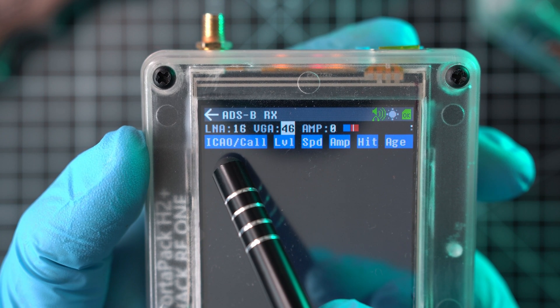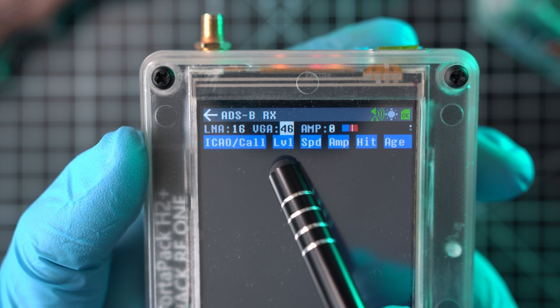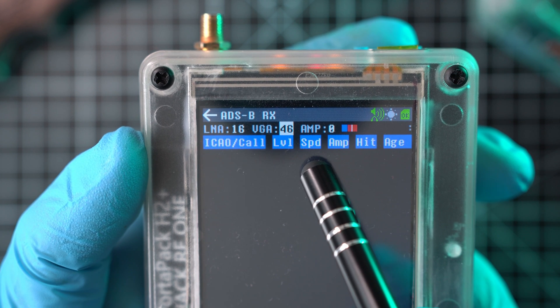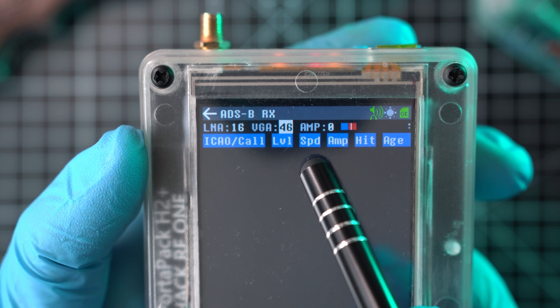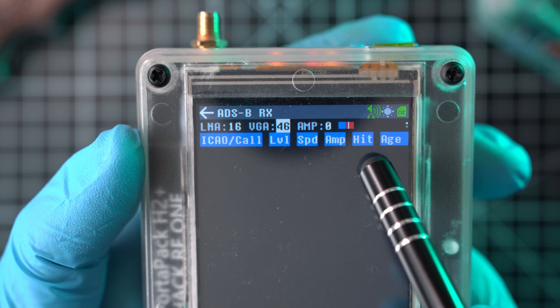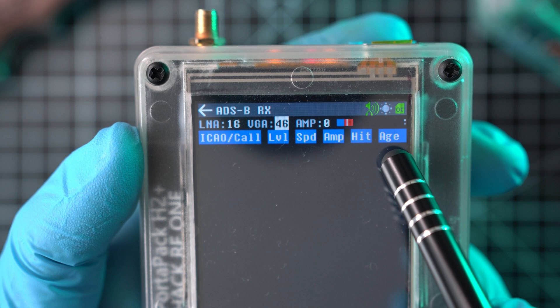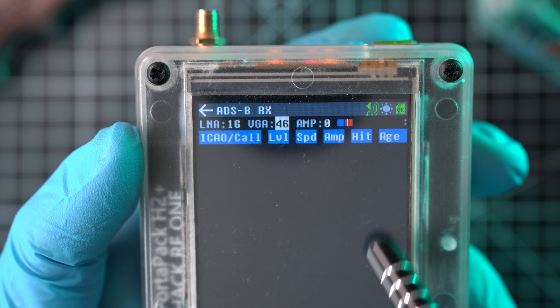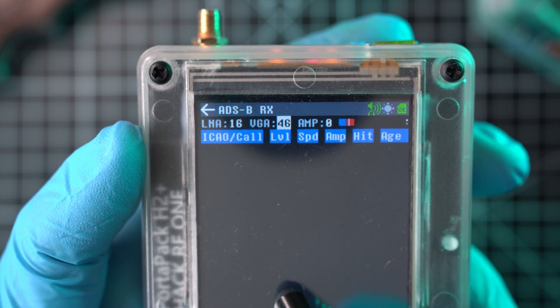And here is call sign or ICAO number, level in hundreds of feet, speed of aircraft in miles, Amp which is signal strength, Hit is number of received packets and H is time in seconds since last packet received. And all will be listed here.